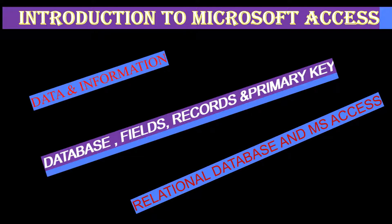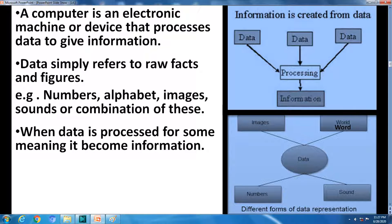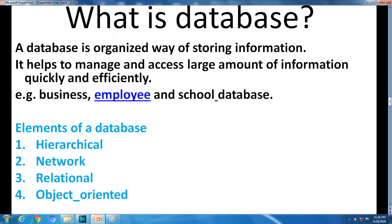A computer is an electronic machine or device that processes data to give information. See the picture — we will get information after processing the data. What is data? Data simply refers to raw facts and figures. A combination of images, words, numbers, and sound is called data.